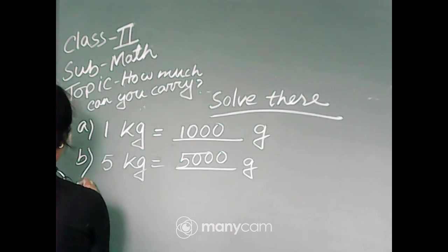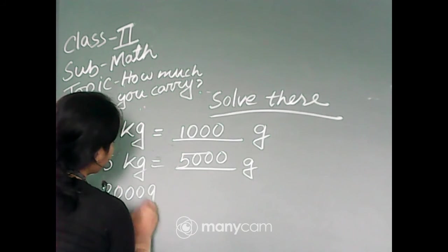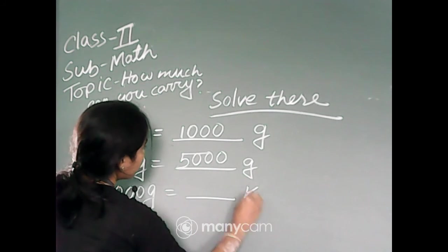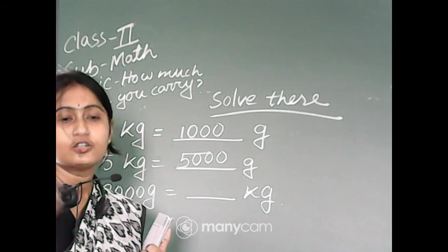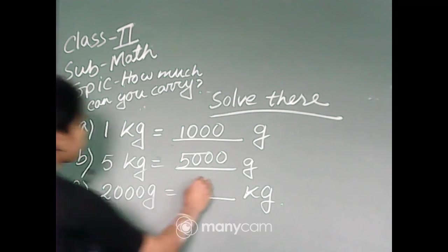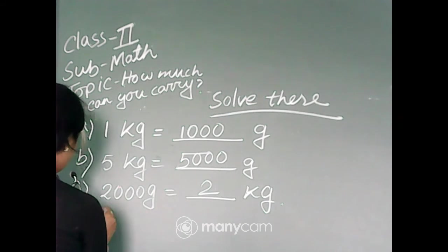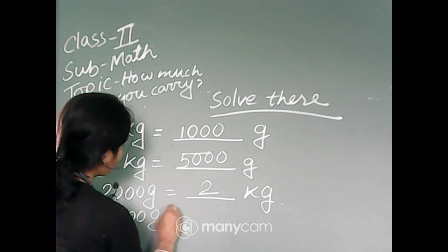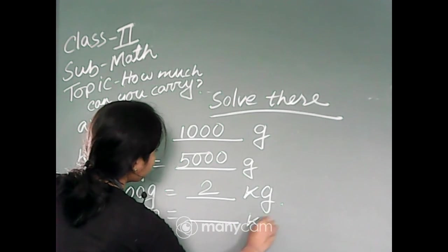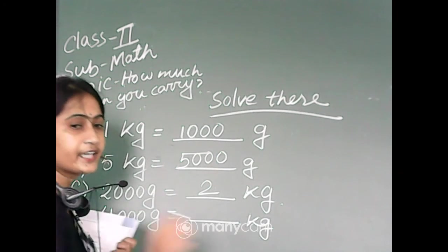Next, number C: 2000 grams equals 2 kg. Okay. Next, number D: 4000 grams equals dash kg. 4000 grams equals 4 kg.